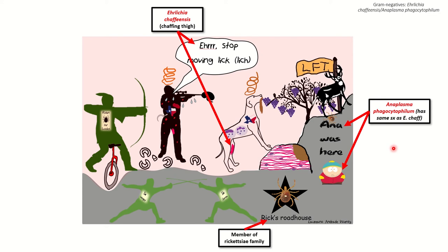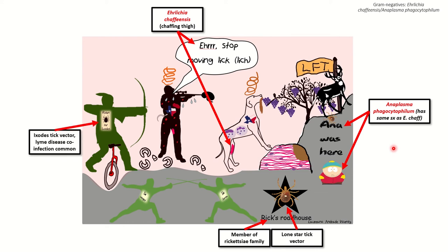These bugs are a member of the Rickettsia family, so I have Rick's Roadhouse to remind you of that. They use the lone star tick as a vector, but also the Ixodes tick as a vector. In fact, Lyme disease is a common co-infection, so if someone were to see these characteristic findings on the Righ-Gamsa stain for this set of bugs, they'd often send either an ELISA or a serology for Lyme as well.